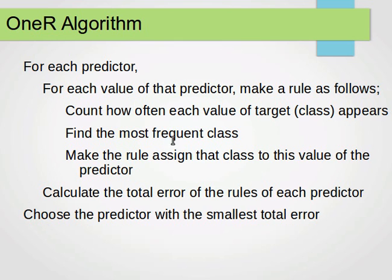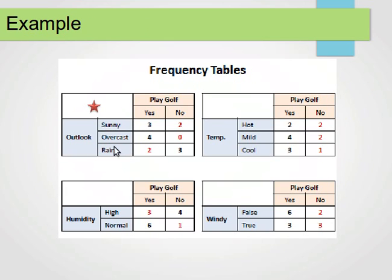This illustrates the step 'find the most frequent class.' For Sunny, we have three yeses and two nos, so if Outlook is Sunny we always choose yes. If Outlook is Overcast, we have four and zero, so we always choose yes. For Rainy, we have two and three, so we always choose no.